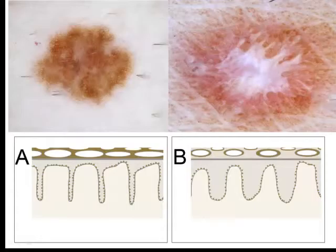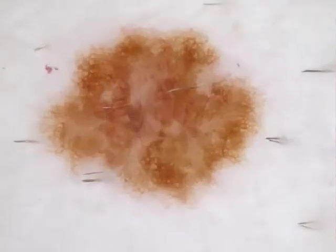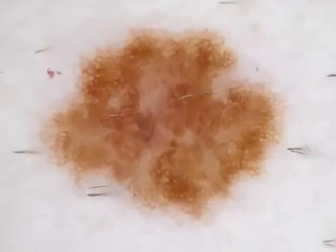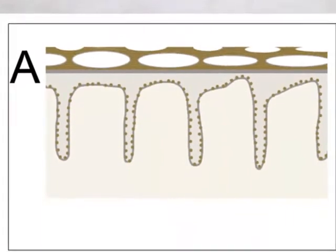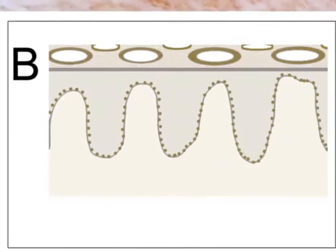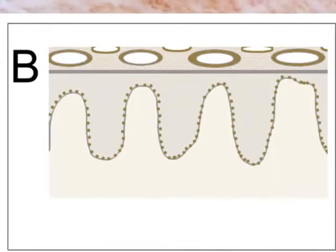Here on the left side, you see the dermatoscopic image of a junctional nevus. You don't see circles, but you see a reticular pattern. The reticular pattern comes into being because of hyperpigmentation of basal keratinocytes, and you see a reticular pattern because the radial ridges are narrow and dermal papillae are broad. If the dermal papillae are narrow and the radial ridges are broad, which happens in acanthosis of the epidermis, like here on the right side, you see non-facial skin circles, like in this dermatofibroma.